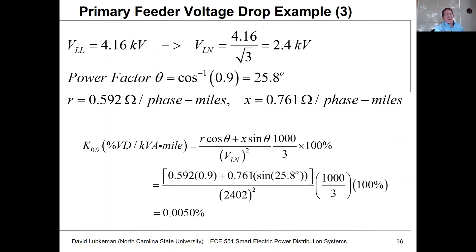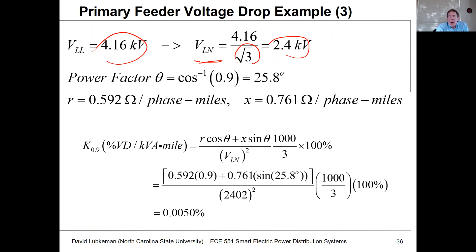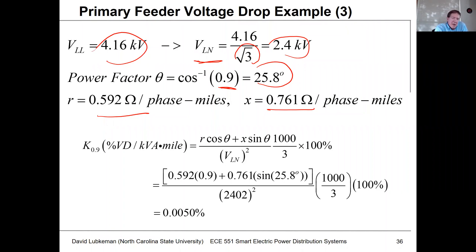We start by defining the circuit voltage: 4.16 kV. When doing the k-factor calculations, the voltage in the expression is a line-to-neutral value, so we divide 4.16 kV by the square root of 3 to get 2.4 kV. The power factor is 0.9, so the arc cosine of 0.9 gives a power factor angle of 25.8 degrees. These are the resistance and reactance values per mile. The k-factor will give percent voltage drop per kVA-mile. Since the k-factor is a function of power factor, I'll add a subscript of 0.9 to indicate it was computed at that power factor — a different power factor requires a new k-factor.